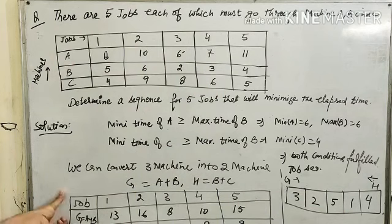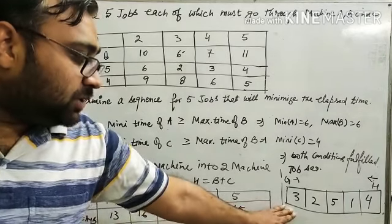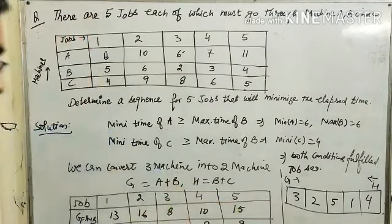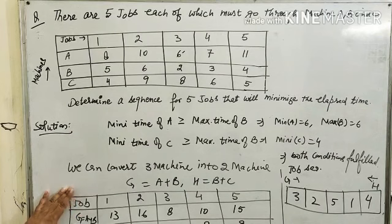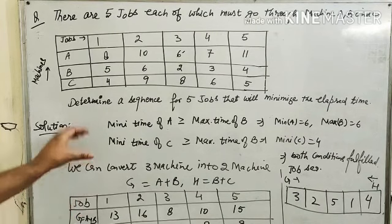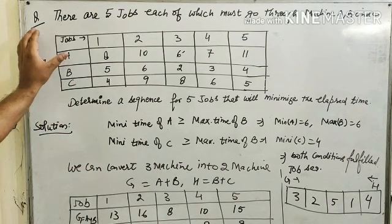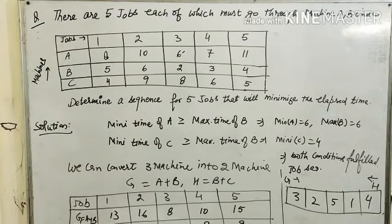Now, converting 3 machines into 2 machines is completed. As soon as we find the job sequence, the purpose of converting 3 machines into 2 machines is fulfilled. We no longer need this converted matrix. Now we will proceed with the original matrix to find the minimum elapsed time.